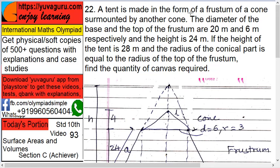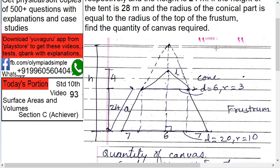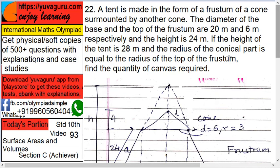A tent is made in the form of a frustum of a cone surmounted by another cone. Understand this first - frustum of a cone means a section of a cone. There are two cones: one is the base cone and the second is the top cone. The diameter of the base and top of the frustum are 20 and 6 meters respectively.